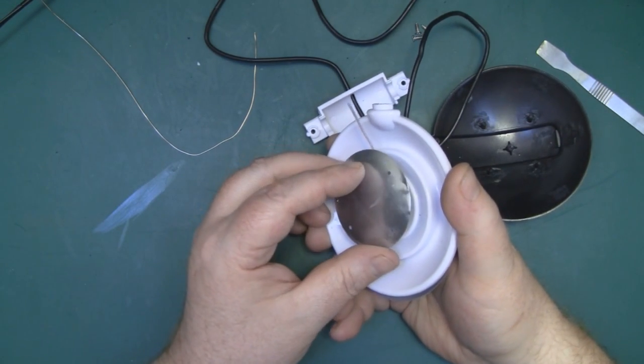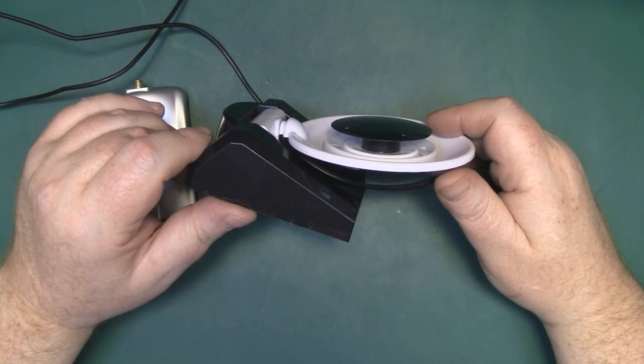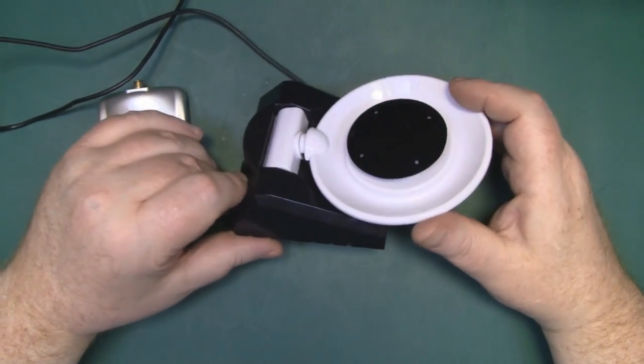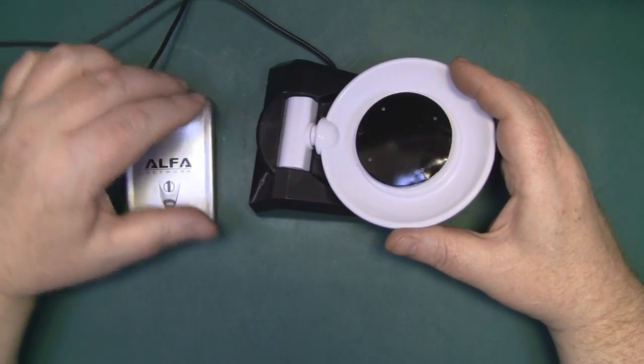So here's the modified Wi-Fi dish antenna. I think what we'll do now is hook it up to the Alpha card and give it another test to see if we've actually improved anything with the modifications.